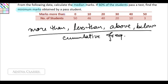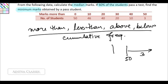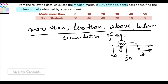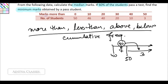For example, marks more than 50 - there are 3 students. So if I talk of 50, then more than 50 there are 3 students. Then marks more than 40, there are 10 students. So all the students who are above 40 are 10 in number. Of these 10, we know 3 are already above 50. So 7 are in the class between 40 and 50. Now I have split 'above 40' into a class between 40 and 50.